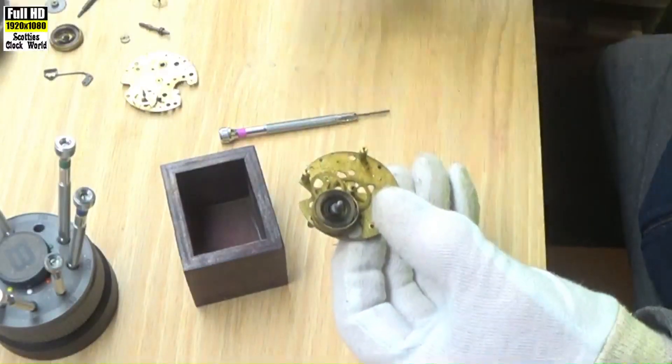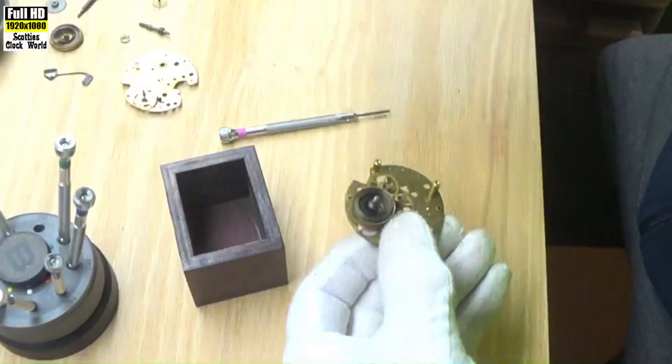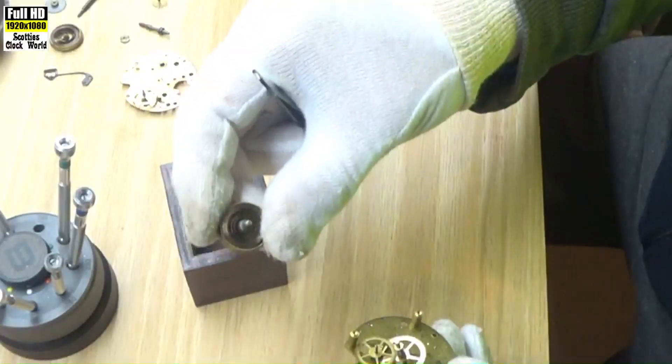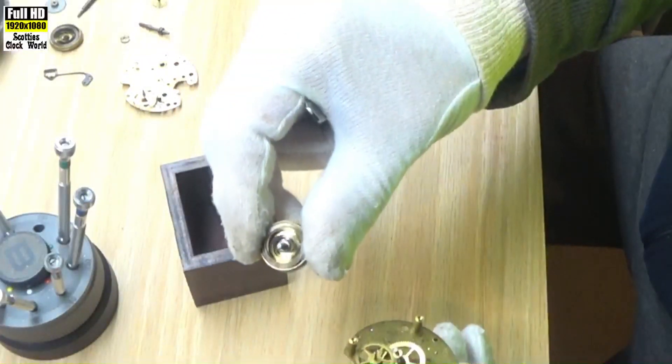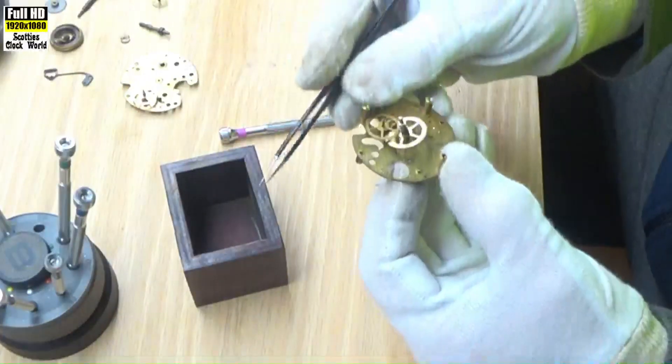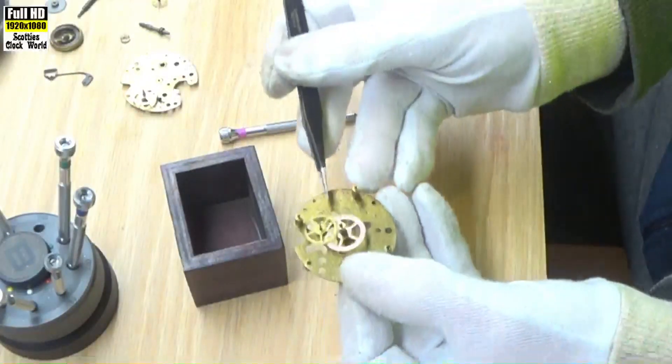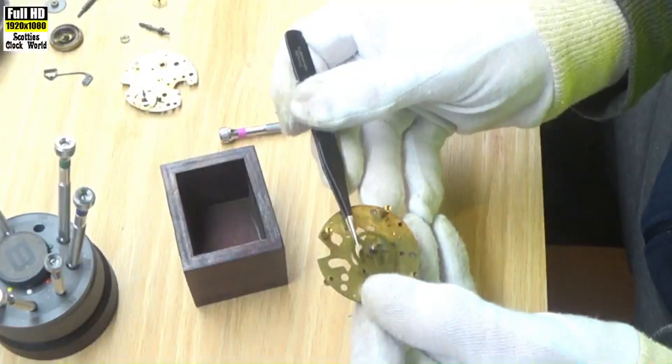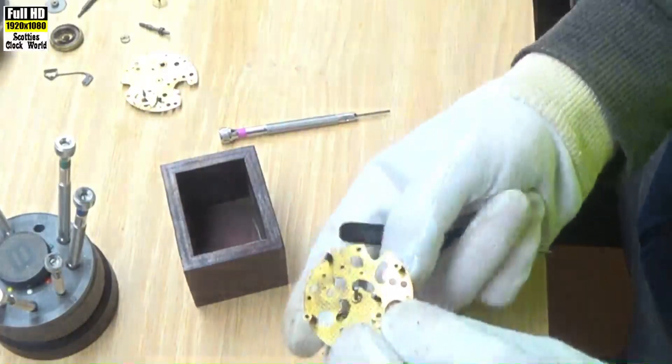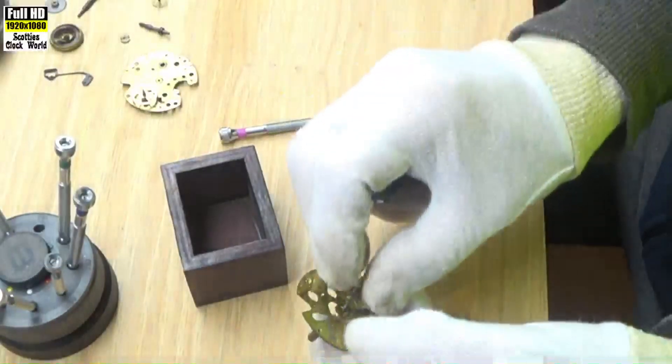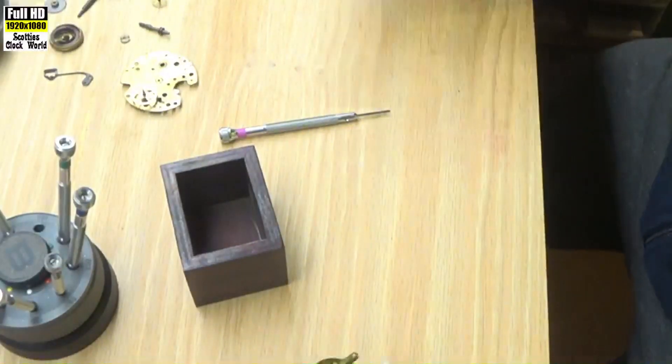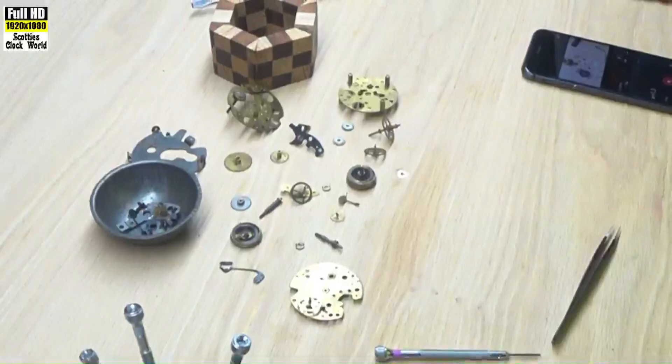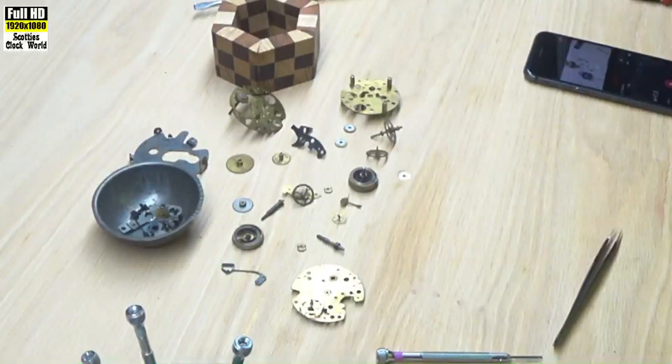There's that, put them over there. That's the other barrel or half barrel with a little spring in it. Is that going to come out or not? Yes it will. That little wheel will fit through there, there we go. There we have it. There's our movement in pieces.